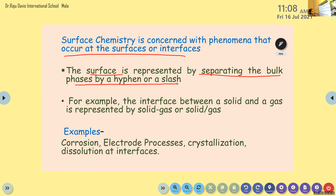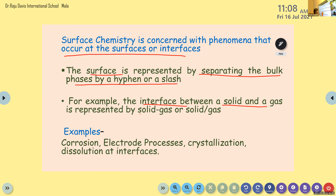The surface is represented by separating the bulk phases by a hyphen or a slash. What's the difference between bulk and surface? Achyut, what do you mean by bulk of a substance? The inner portion — other than the surface. We can separate these bulk phases with the surface by a hyphen or a slash. For example, the interface between a solid and gas — we can write it as solid-gas or solid/gas.